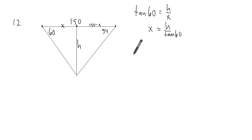Now I'm going to do tan of 54. That's just one equation over here. Tan of 54 for this triangle here will be h over 150 minus x.